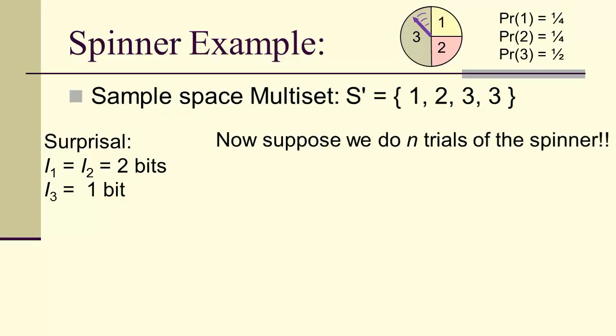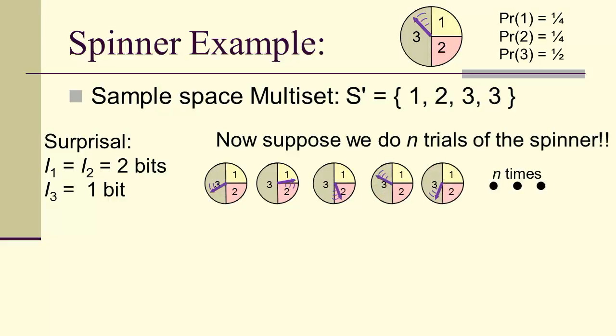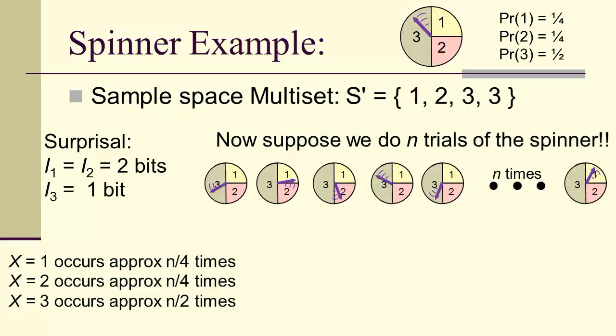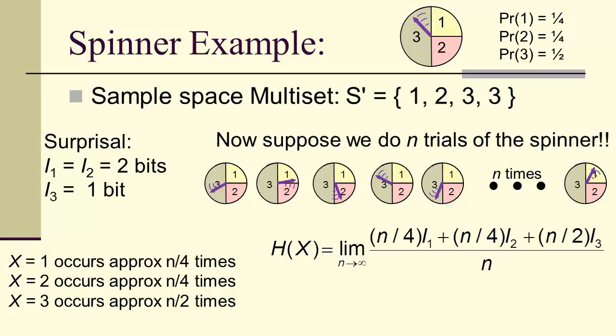The surprisal is two bits for one and two, and one bit for the spinner outcome of three. Now suppose we do n trials for very large n. So we spin and spin and spin. One occurs about n over four times, two occurs about n over four times, and three occurs about n over two times. Therefore, the entropy is the average of these informations, the surprisals, and that's going to be three halves bits.